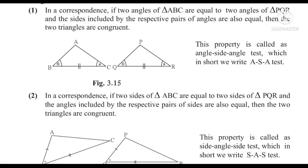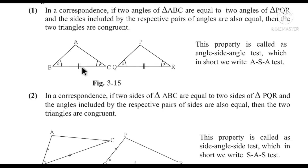Tests for congruence of triangles. First test: In triangle ABC and triangle PQR, angle B ≅ angle Q, angle C ≅ angle R, and side BC ≅ side QR. Corresponding angles are congruent and the side included by these two angles is also equal. Therefore, two triangles are congruent by the ASA test — Angle, Side, Angle.